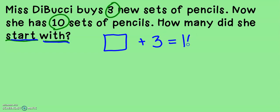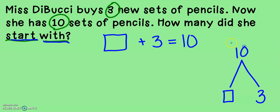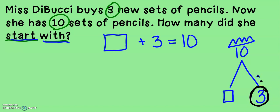Now she has ten sets of pencils. How many did she start with? Something plus three equals ten. If I put that on my math mountain, here are my two numbers that I'm adding — something plus three — that gives me ten. Ten is the king of my math mountain. I think I'm going to count up for this one. I'm going to start at three and count up to ten. I'm going to say three, four, five, six, seven, eight, nine, ten.